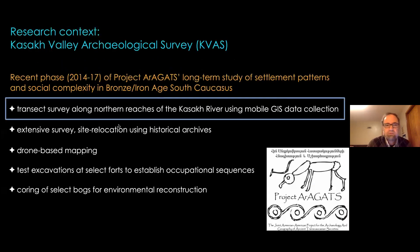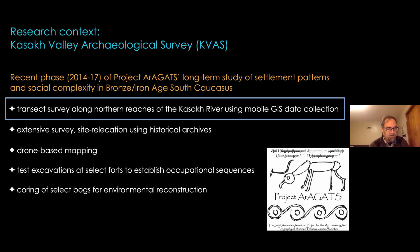To give research context: our recent data collection workflow was developed in the context of the Cossack Valley Archaeological Survey, or CLAS, which entailed intensive and extensive settlement survey, aerial mapping, and test excavations in the upper Cossack River Valley of north-central Armenia. The CLAS survey began in 2014 and was an initiative of Project Aragats, a long-standing American-Armenian collaboration which since 1998 has been investigating ancient Bronze and Iron Age complex polities in the region. We're going to primarily look at the transect survey aspects of it and how we deployed mobile GIS there.